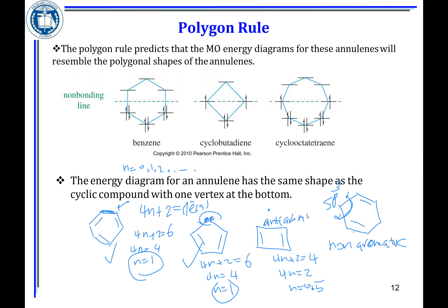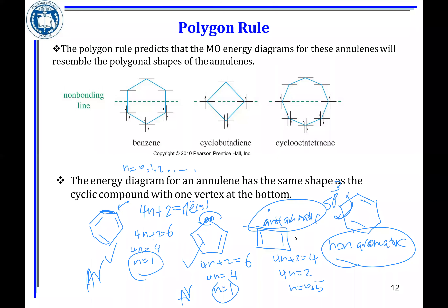So we have aromatic, non-aromatic, aromatic, aromatic, non-aromatic, and anti-aromatic. You should be able to distinguish between them by going through the four conditions — the rules.